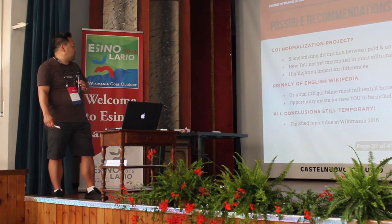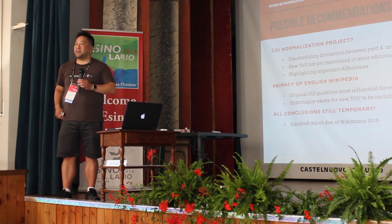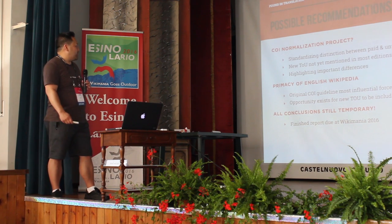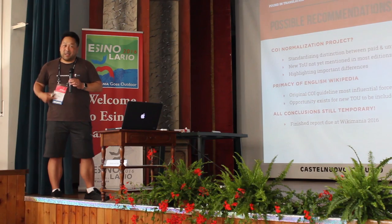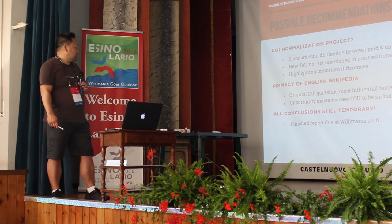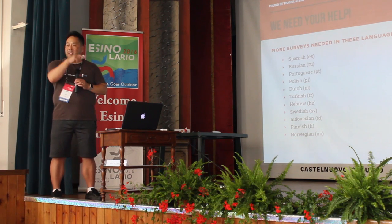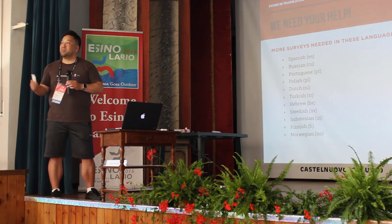So looking at conclusions: would there be any interest in normalizing conflict of interest policies across different editions or among different languages? We're not sure — that's only something you folks can answer. There also seems to be a big influence of the original COI guidelines in English Wikipedia on other editions, which makes sense if you come later you might just borrow from the earlier pioneers. All these conclusions are still temporary — we need feedback in these languages, so if you know a good Wikipedian who can fill out the survey, please have them do so.